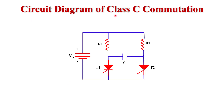Now let's look at the circuit diagram of Class C commutation. Class C commutation is a type of forced commutation, and in any forced commutation circuitry the supply voltage is a DC supply voltage VS at the input side. Here we use two thyristors: T1, which is the main thyristor, and T2, which is the complementary thyristor. We also use a commutating capacitor between the two thyristors T1 and T2, and two resistors R1 and R2.